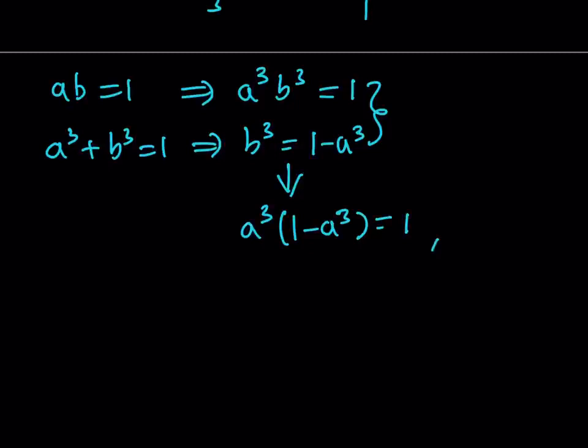And one more substitution. Bear with me because I'm almost done with this. You can just go ahead and say, hey, you know what? Let a³ equals u. I don't know. Something like that. And you'll be getting something like u minus u² is equal to 1. And finally, u² minus u plus 1 is equal to 0.